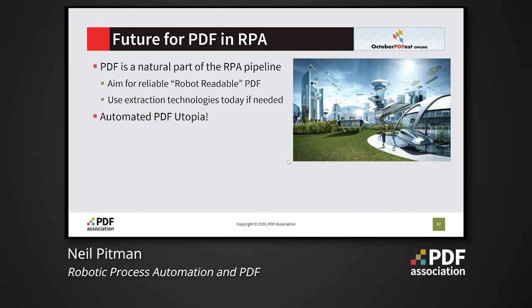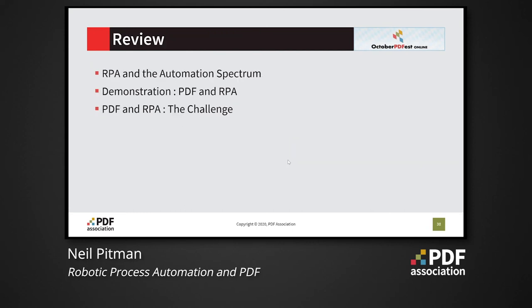So what does the future hold for PDF and RPA? The ubiquity of PDF files holding key data makes PDF a natural part of the RPA pipeline. In some cases we'll have to continue to rely on extracting PDF text, but to make the pipeline integration as smooth as possible we need to ensure truly reliable robot-readable PDFs by making use of the data options that the PDF format supports. If we can achieve that, the future will indeed be an automated PDF utopia. To summarize: we've explained how RPA fits into the spectrum of automation solutions, provided demonstrations of RPA and PDF, and considered how to achieve optimal solutions such as attached data files as a way of moving forward.